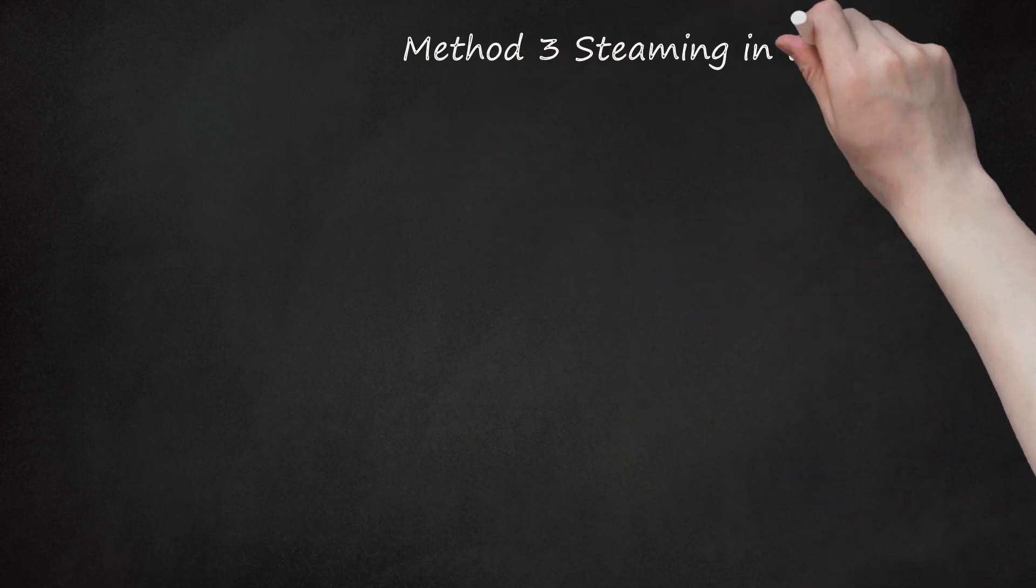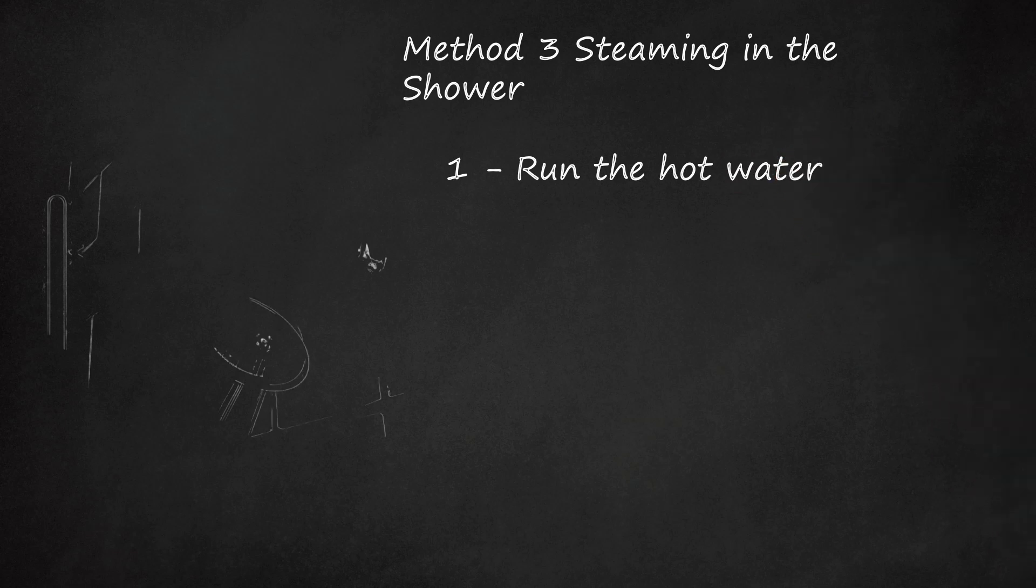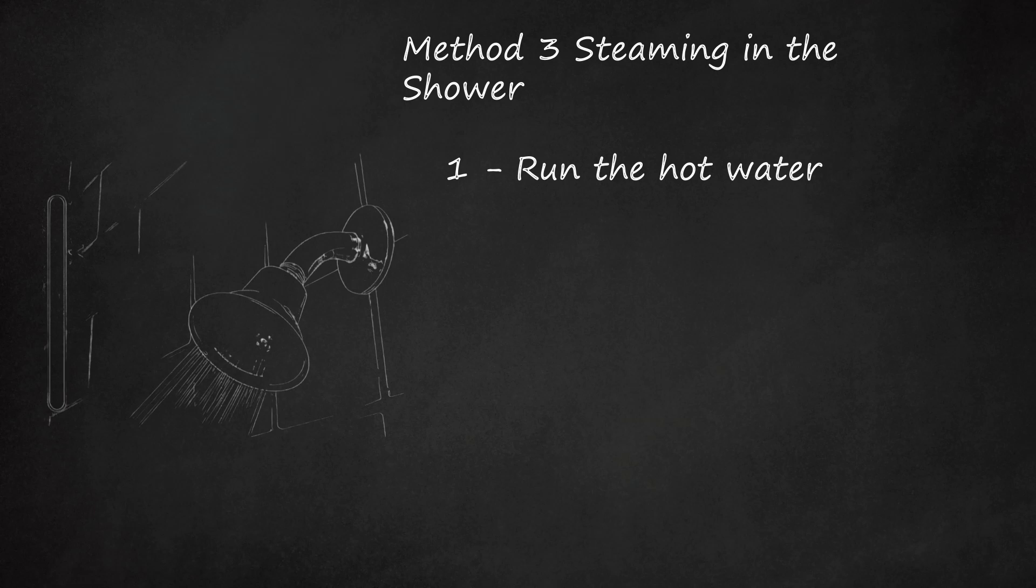Method 3: Steaming in the Shower. Step 1: Run the Hot Water. Get your shower warm enough so that it is capable of fogging up the glass in your bathroom. Keep it warm enough so that the steam builds, but not so hot that you can't actually shower in the water.